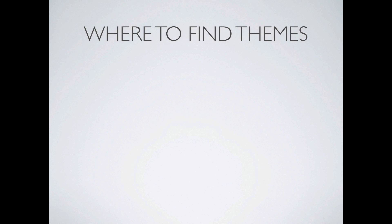Where do you find themes? The WordPress repository is probably one of the first places you can start — it's over 4,000 themes by now. It really is a massive repository. You can search through it by different functionality you want: two column, three column, colors, things like that to try and narrow it down.